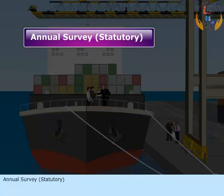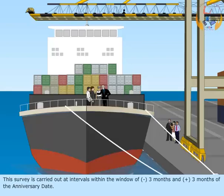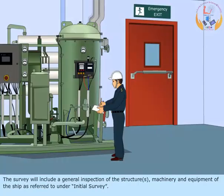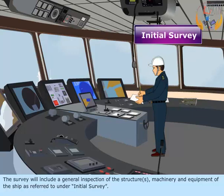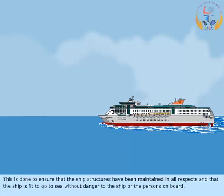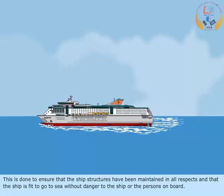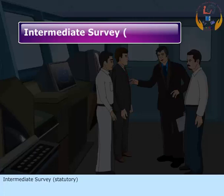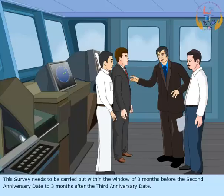Annual survey, statutory. The survey is carried out at intervals within the window of minus 3 months and plus 3 months of the anniversary date. The survey will include a general inspection of the structures, machinery and equipment of the ships as referred to under the initial survey. This is done to ensure that the ship's structures have been maintained in all respects and that the ship is fit to go to sea without danger to the ship or the persons on board. The survey needs to be carried out within the window of 3 months before the 2nd anniversary date to 3 months after the 3rd anniversary date.